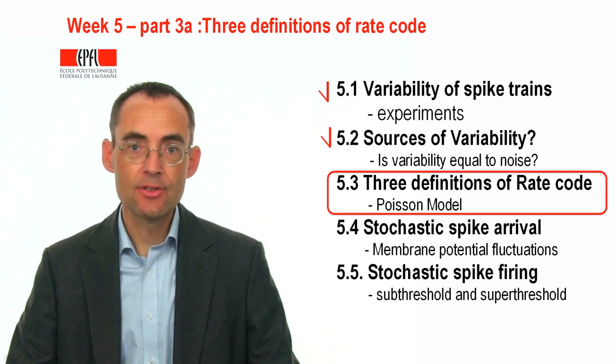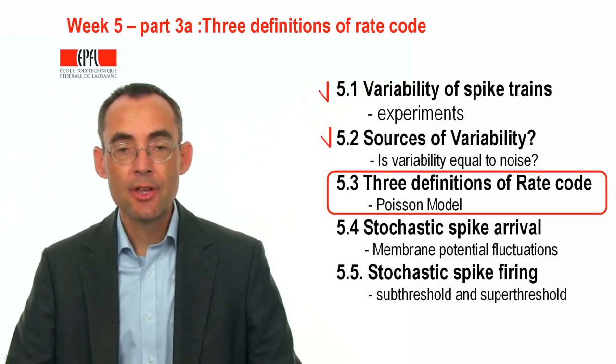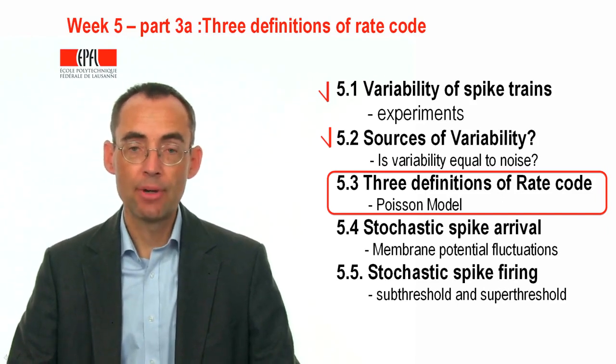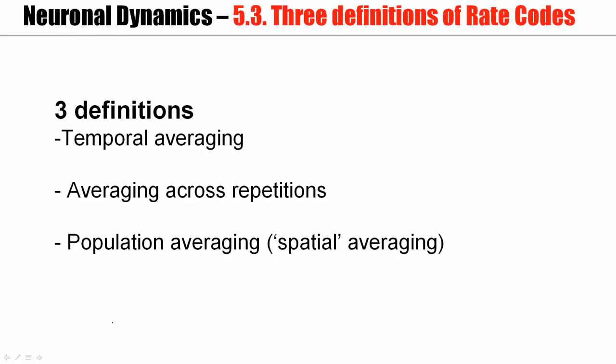Spikes, trains are not regular, the membrane potential fluctuates. And then the question arises how can we measure, how can we describe these fluctuations? There are in fact different ways of doing this. A famous concept is the concept of rate coding, but that concept is not well defined. There are in fact three different definitions for firing rate.